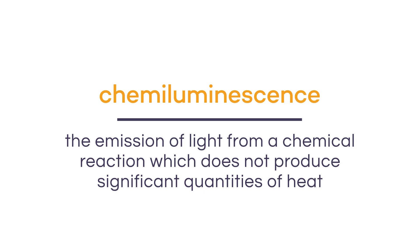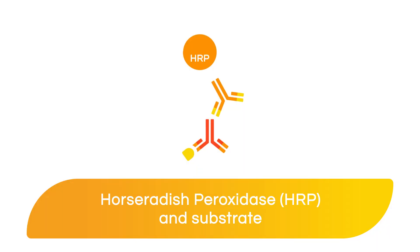First, we will start with an overview of chemiluminescence. Chemiluminescence is defined as the emission of light from a chemical reaction which does not produce significant quantities of heat. Chemiluminescence is a detection method commonly used for western blots. Photons of light are produced as the result of substrate addition to a membrane where an enzyme-linked antibody is bound.